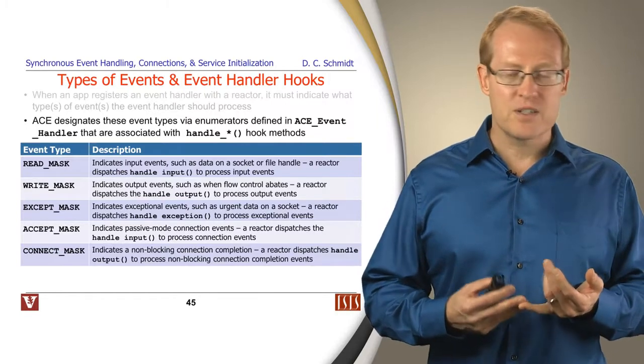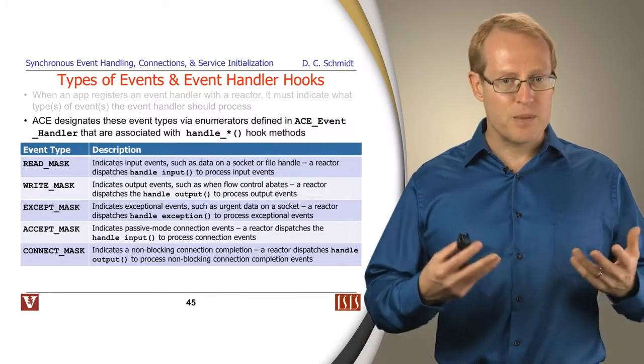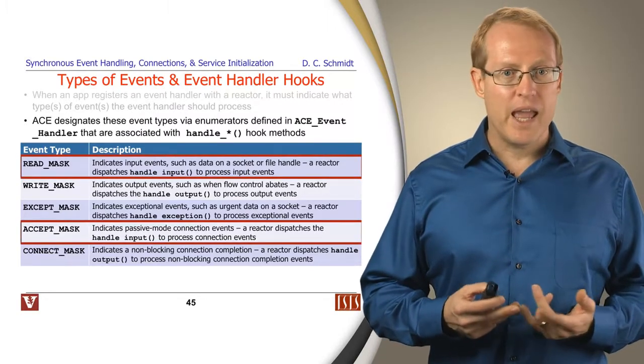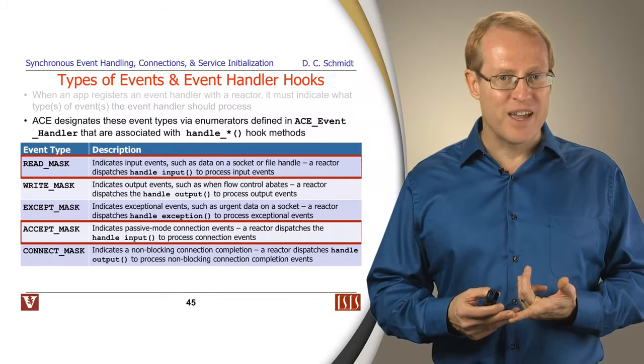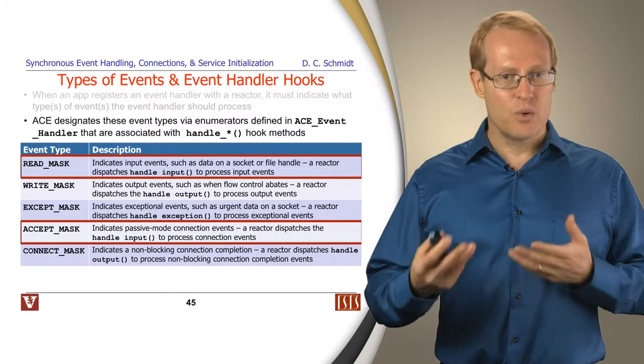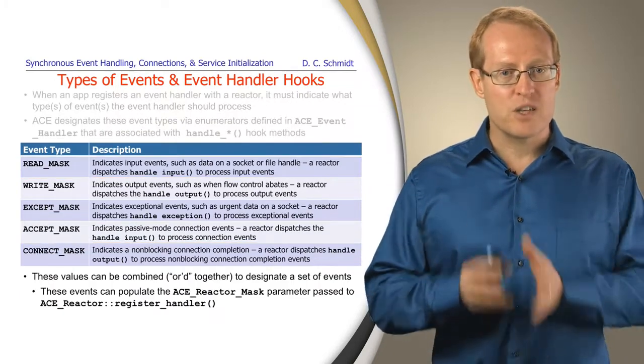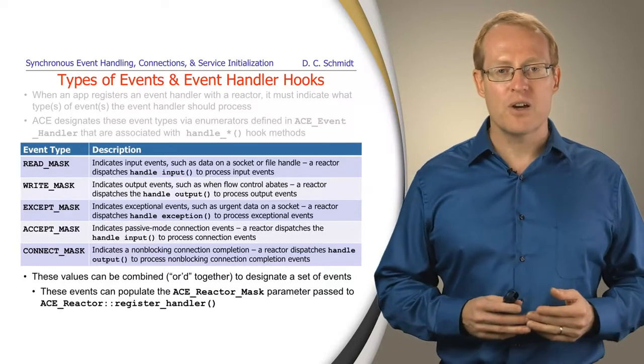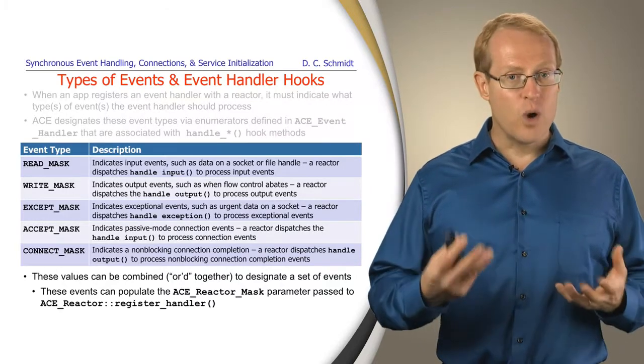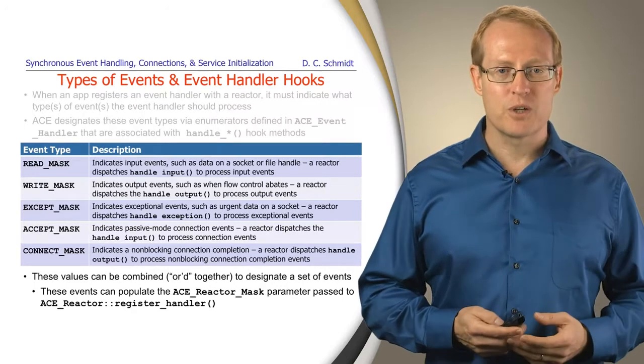There's a whole slew of different kinds of event types that can be handled by the reactor. There's read events. There's accept events. There's connect events. There's output events called write events, exception events, and so on. We're going to be focusing primarily on read events and accept events in our examples here. And I'll show you, as we go through this, how these are applied. They're basically provided by a bit mask and you can OR the bit mask fields together in order to be able to register for multiple different types of events. And that allows one event handler to handle many different kinds of things if you choose to use that particular approach.